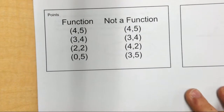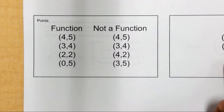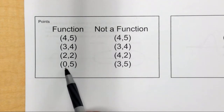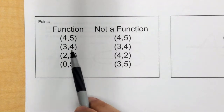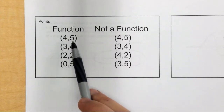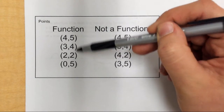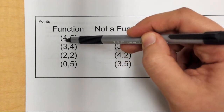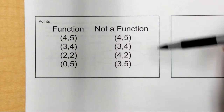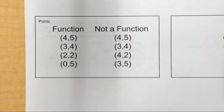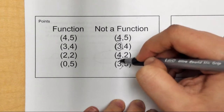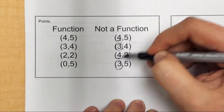Let's look at points, which are similar to a table. These four points make a function because each x value is unique and goes to one output. It's okay if two outputs are the same — it's the x values we care about. Contrast that to this set: it's not a function because the four repeats, so four goes to two outputs, and the three also repeats. These repeating x values make it not a function.